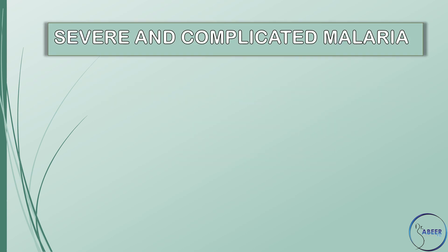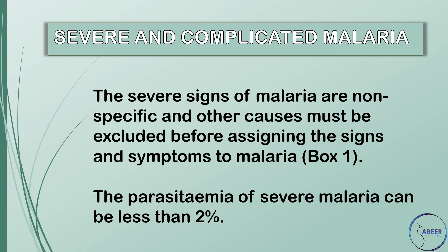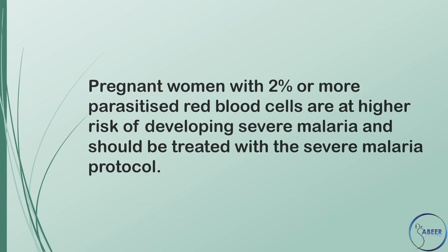Definition of terms used in this guideline. Severe and complicated malaria: The severe signs of malaria are non-specific and other causes must be excluded before assigning the signs and symptoms to malaria. The parasitemia of severe malaria can be less than 2%. Pregnant women with 2% or more parasitized red blood cells are at higher risk of developing severe malaria and should be treated with a severe malaria protocol.